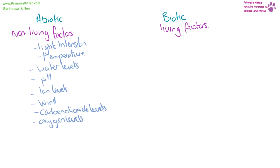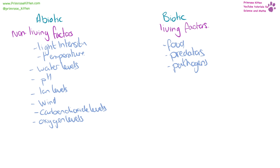Biotic factors are going to be living factors such as food, predators, and pathogens. An increase, reduction, removal, or introduction of any of these factors can have a dramatic impact on a community. For example, the introduction of a new predator or a new pathogen could wipe out a community, and an increase or decrease in temperature could mean that an organism's food source is gone or an organism can't survive in that environment.